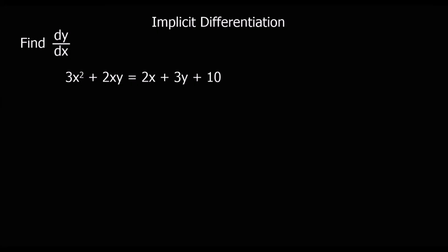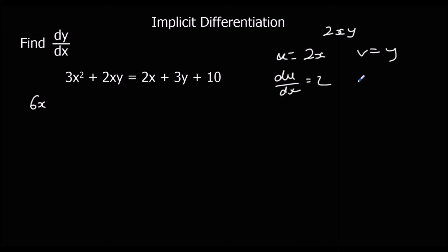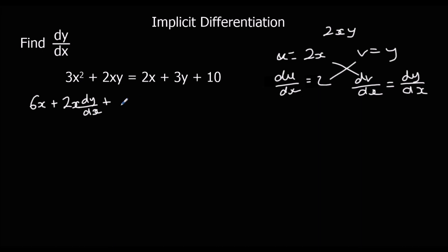Here's another one — pause the video, give it a go, then press play when you're ready. So 3x squared differentiated is 6x. 2xy is a product rule: u equals 2x, v equals y, so du/dx is 2 and dv/dx is dy/dx. So we've got u dv/dx which is 2x dy/dx, plus v du/dx which is 2y. That equals 2x differentiated is 2, and 3y differentiated is 3 dy/dx, because it's a y term.